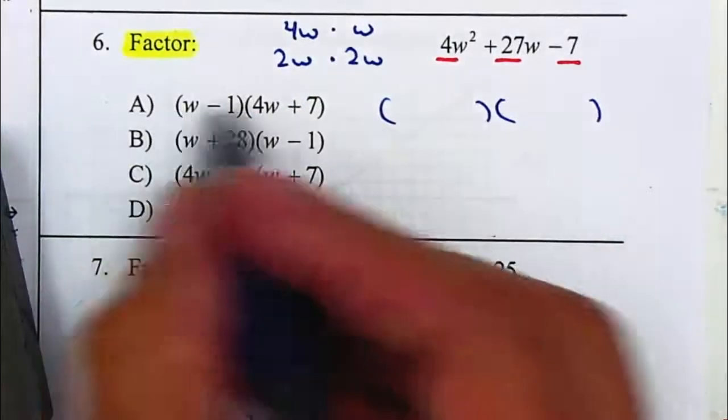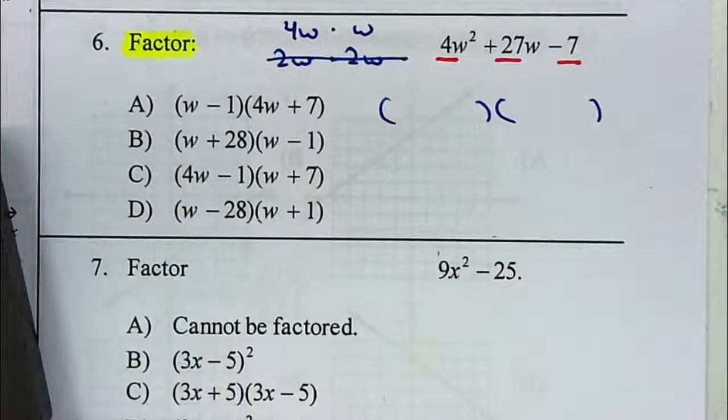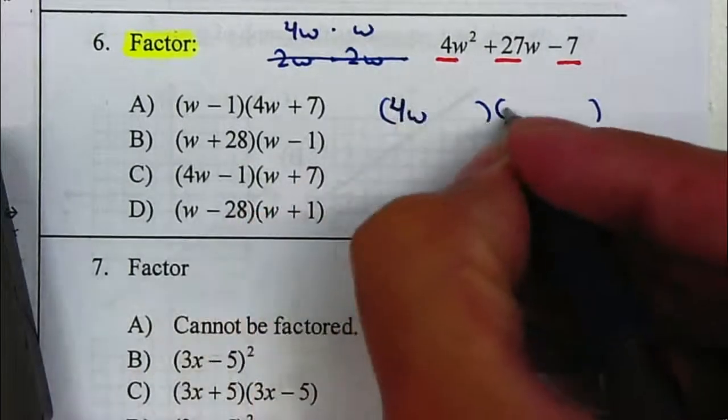Now, if you look at your answers, there are no 2s in there. So I know that this will not be a factor. So therefore, I'm just going to use the 4W and a W.